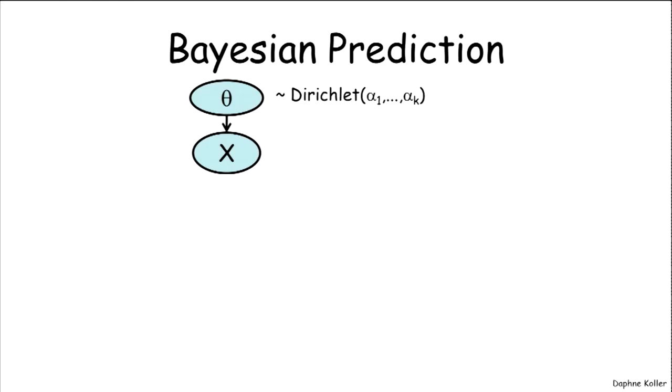Now let's think about how we use a Dirichlet distribution once we have it. So assume that we have a model where our parameter theta is distributed Dirichlet with some set of hyperparameters.